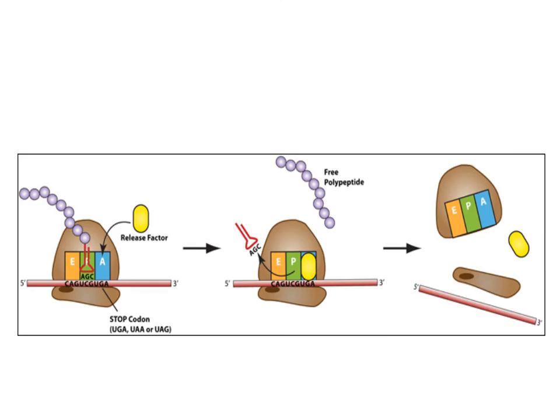Translation ends when the ribosome reaches a stop codon, either UAA, UAG or UGA. There are no tRNA molecules with anticodons for stop codons. Instead, protein release factors recognize these codons when they arrive at the A site.